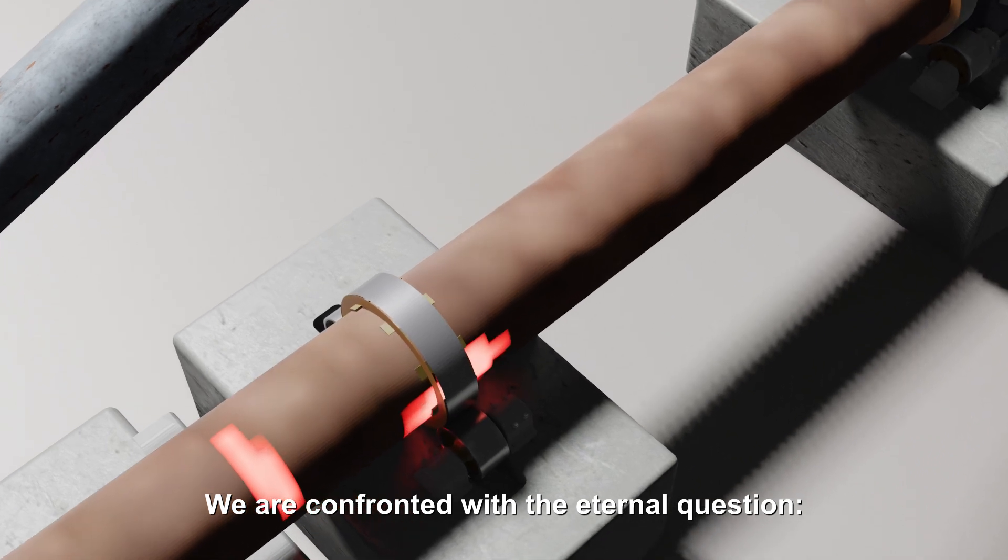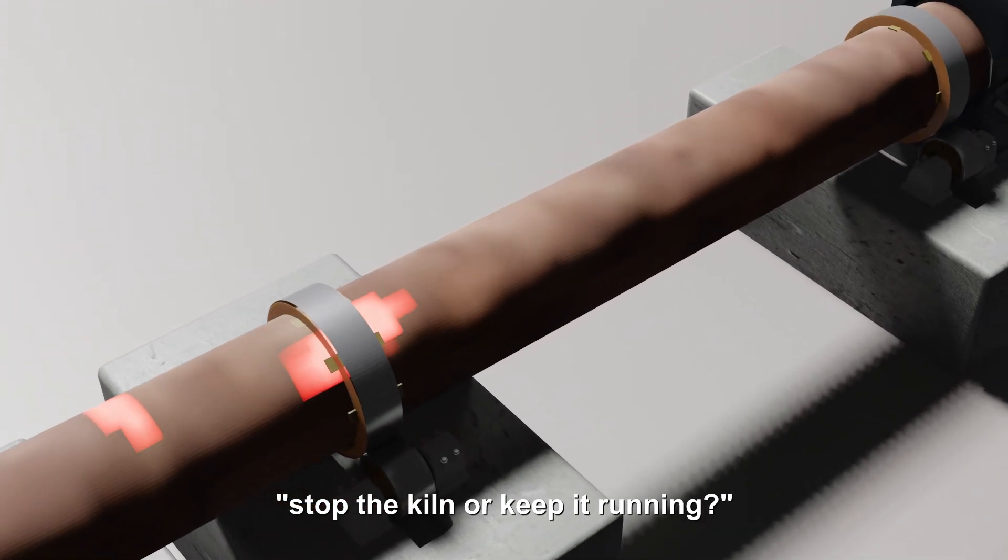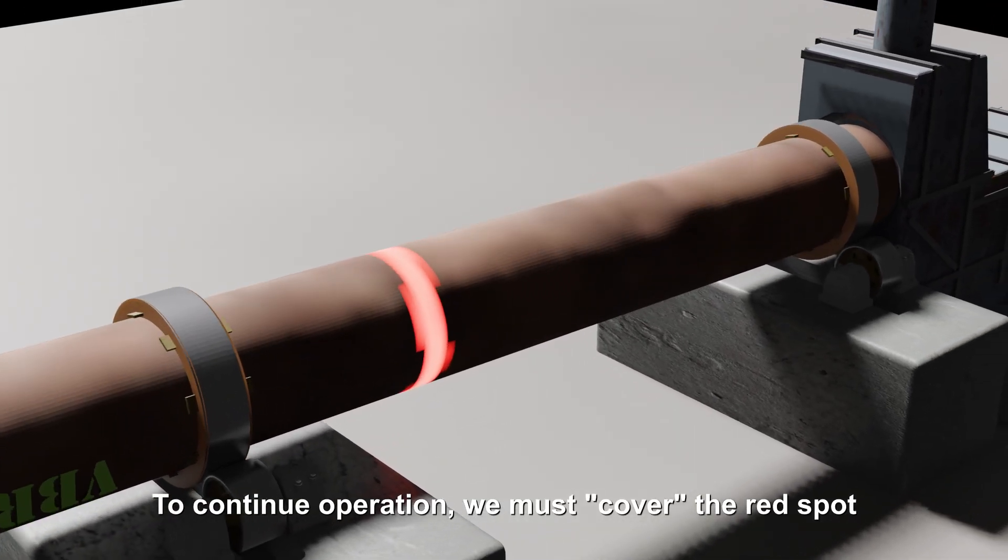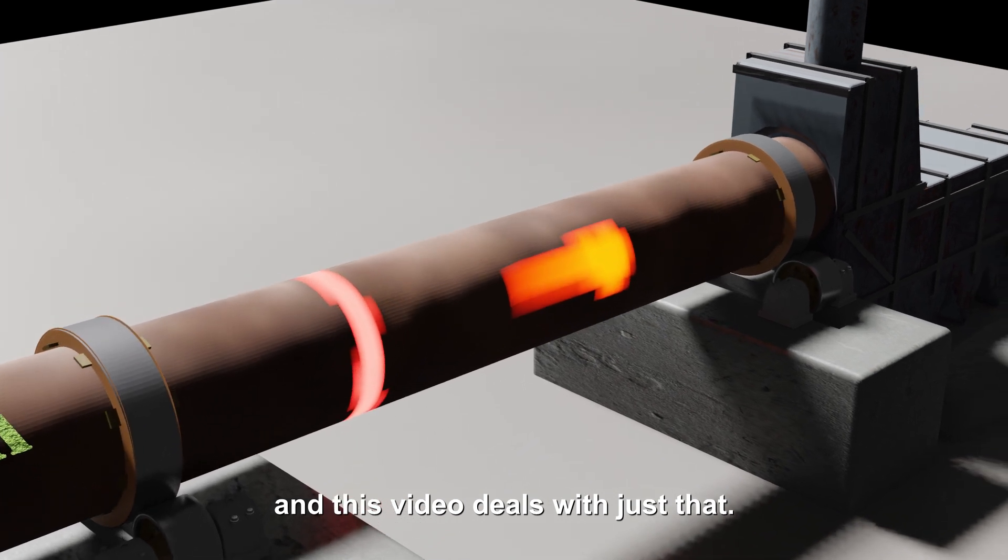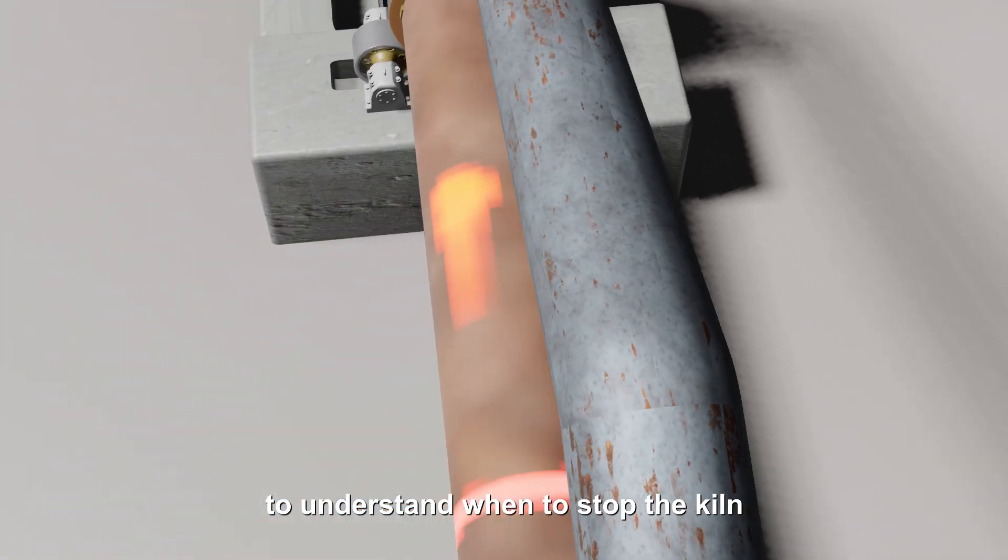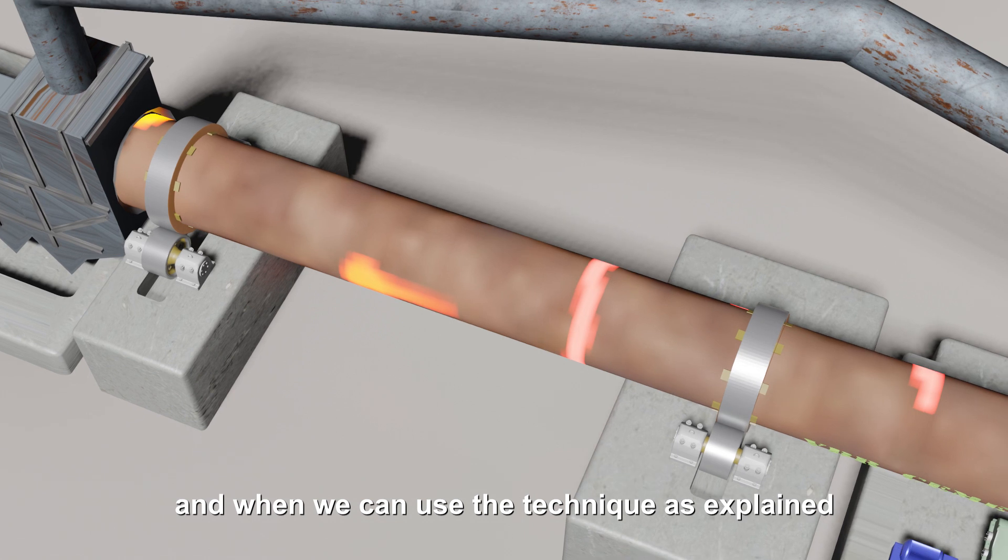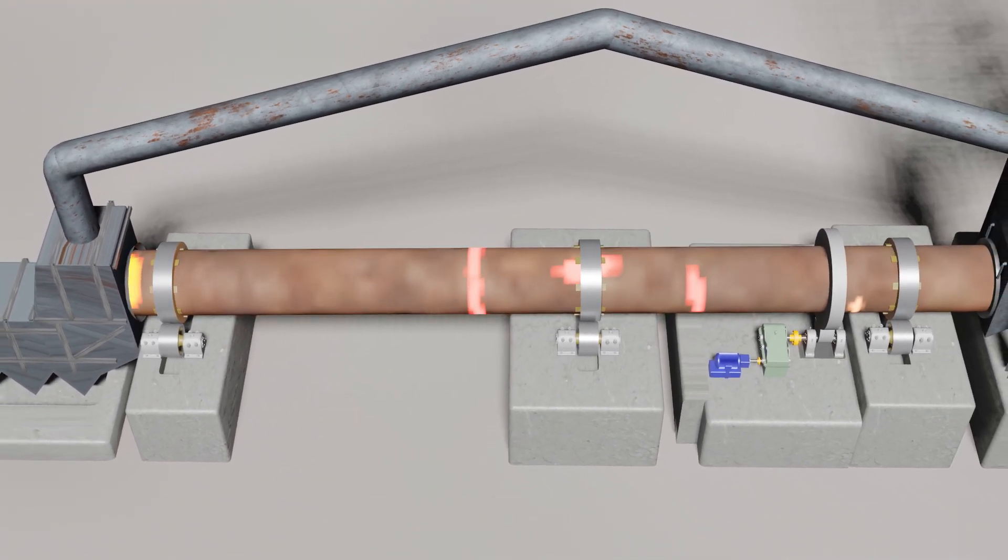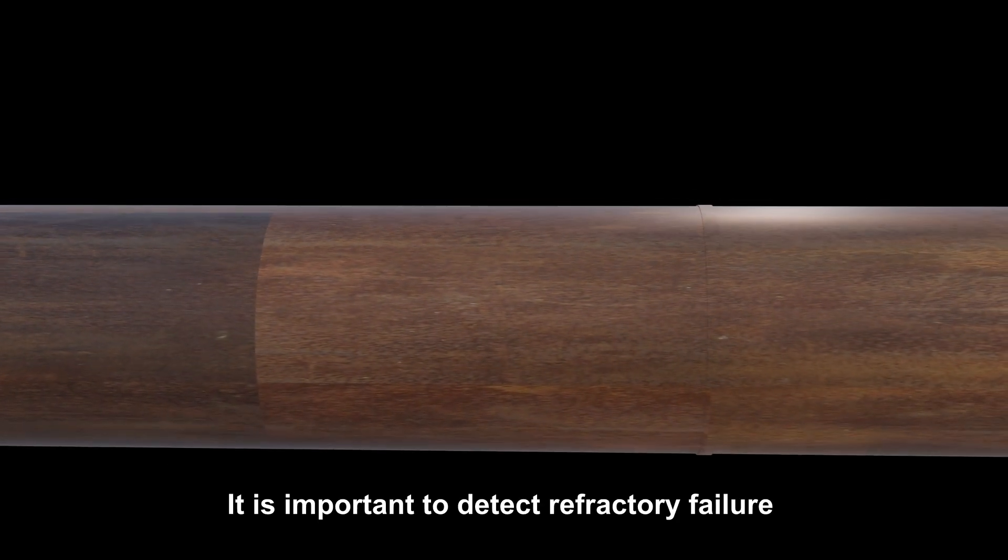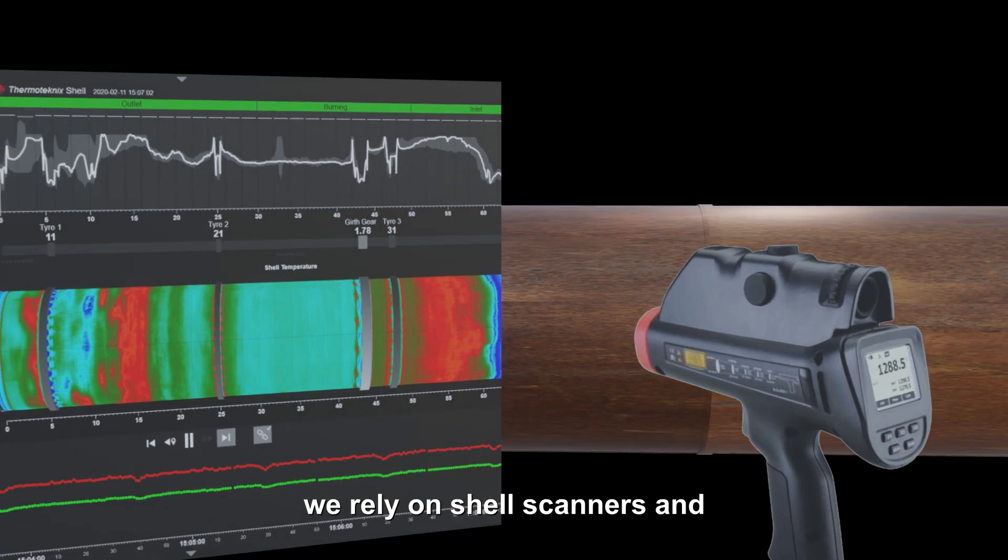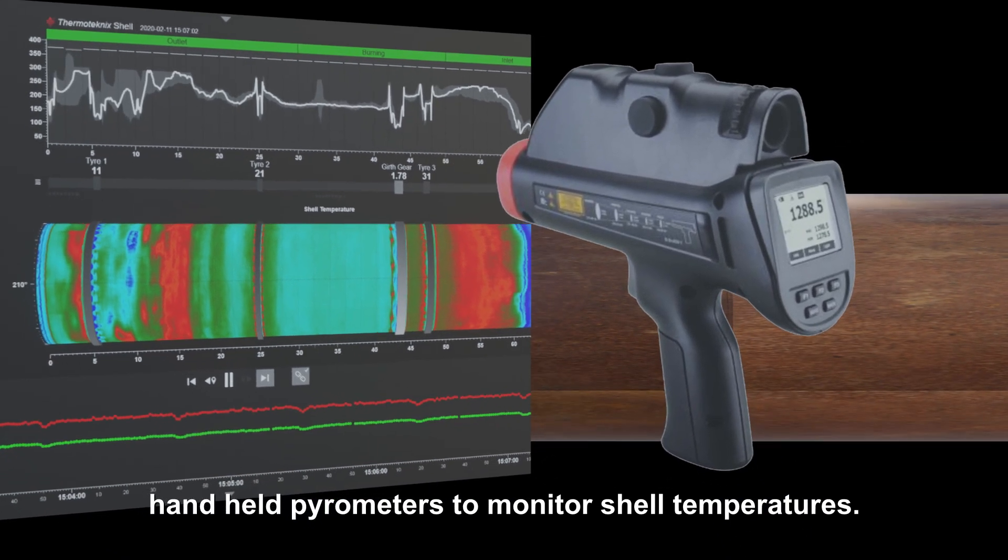We're confronted with the eternal question: stop the kiln or keep it running? To continue operation we must cover the red spot, and this video deals with just that. Let's first look at the location of the spots to understand when to stop the kiln and when we can use the technique explained hereafter. It is important to detect refractory failure as early as possible, and for this we rely on shell scanners and handheld pyrometers to monitor shell temperatures.